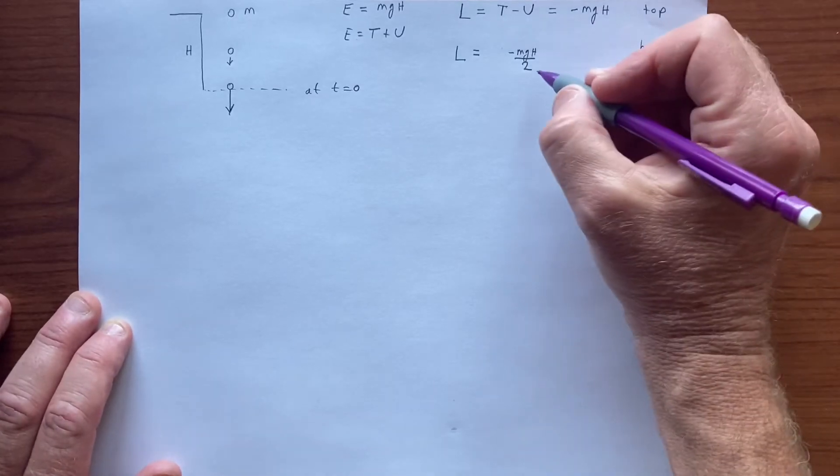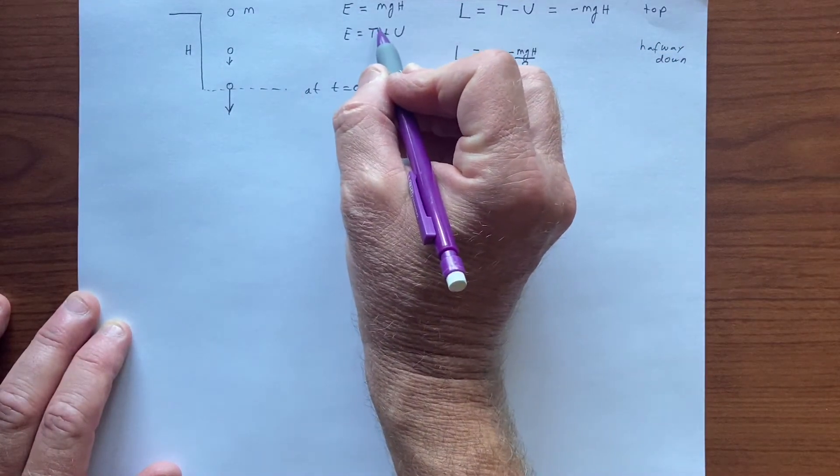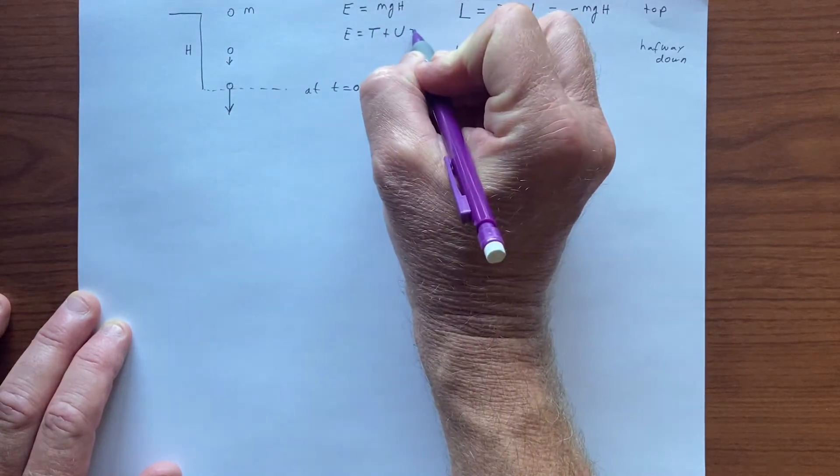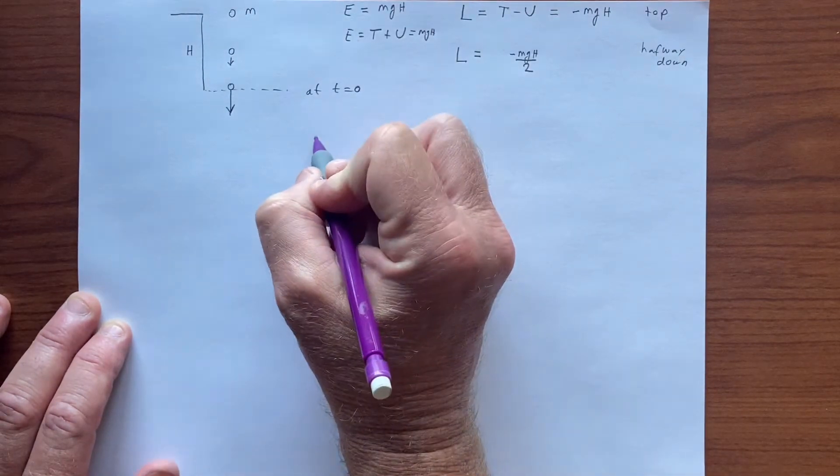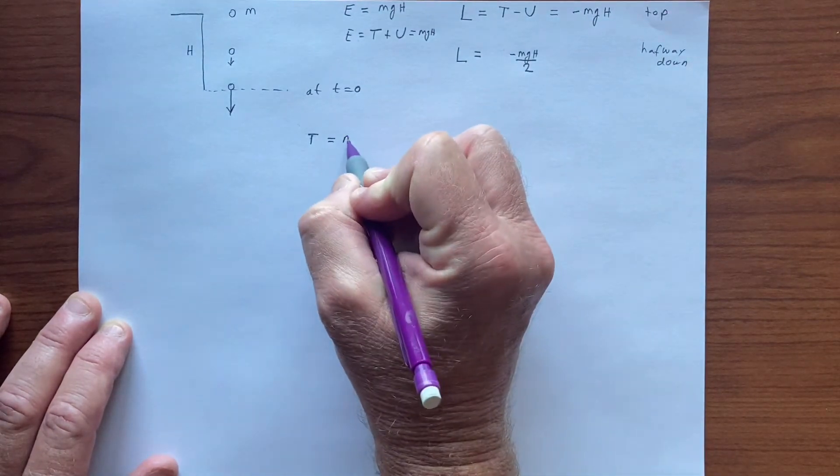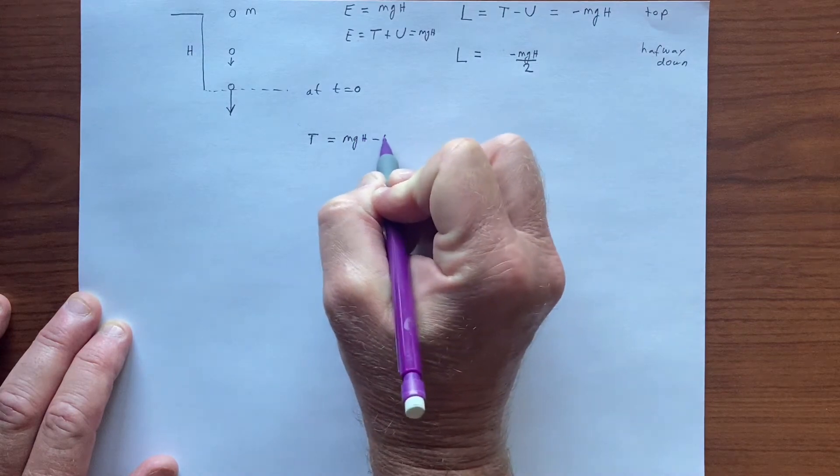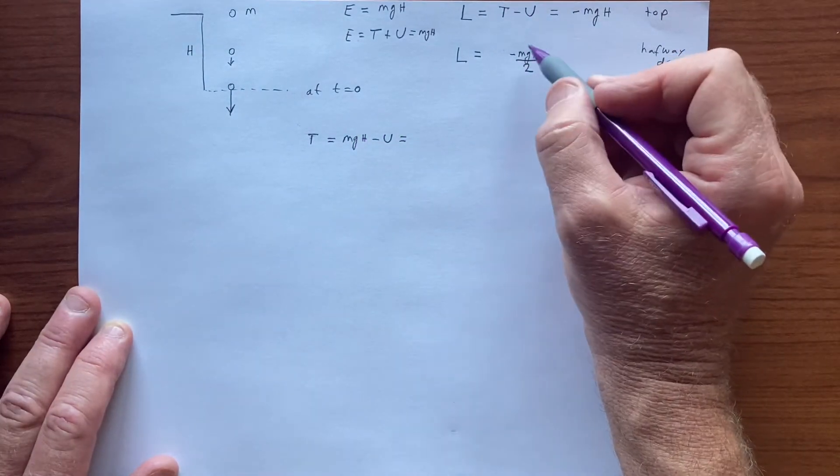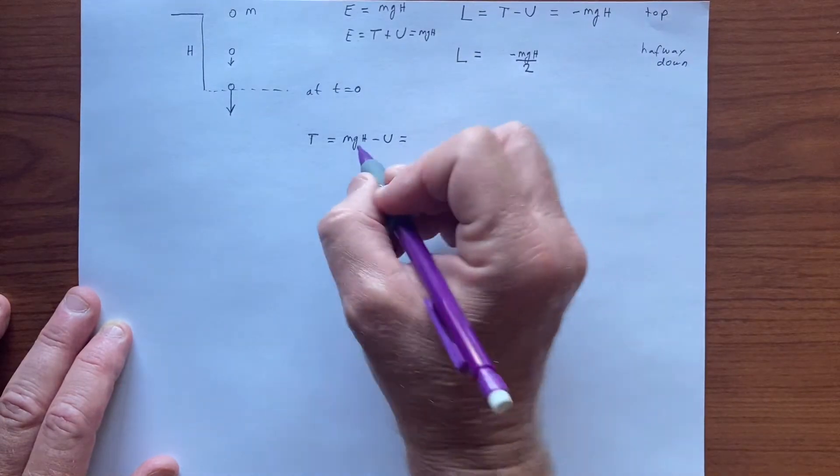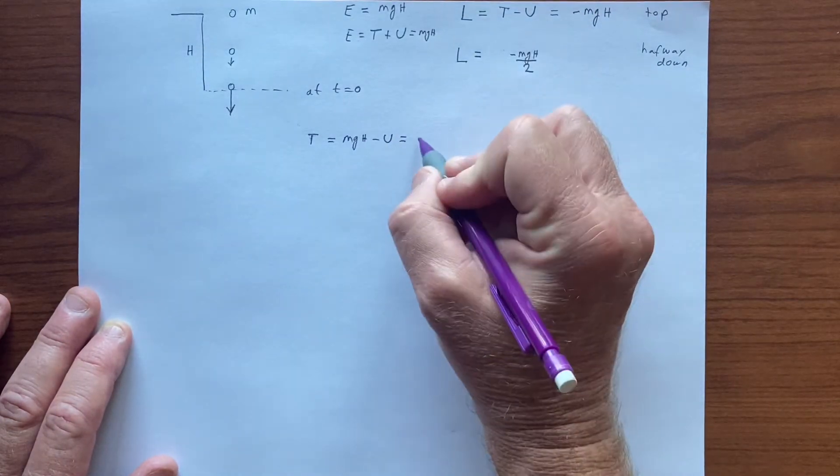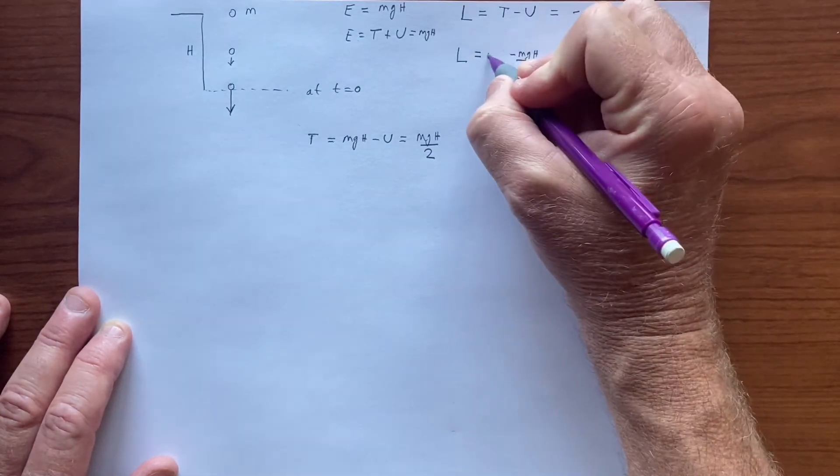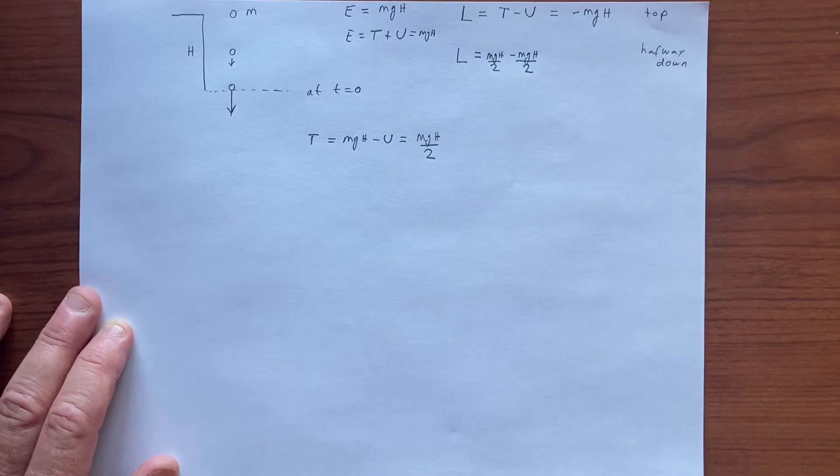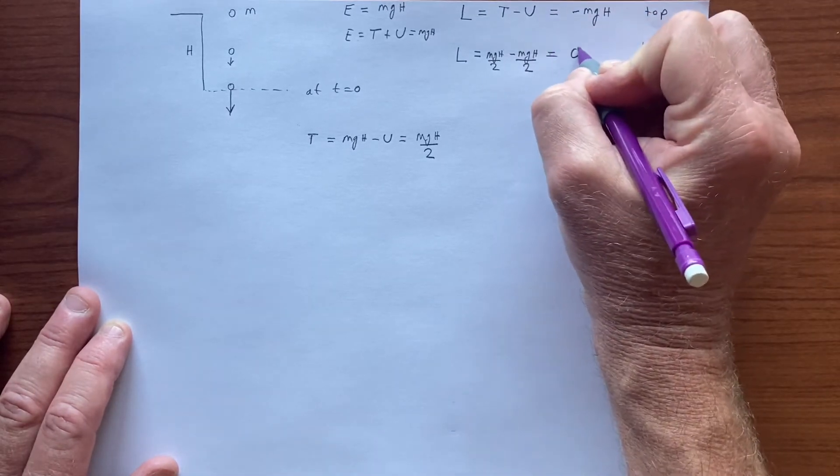And the kinetic energy has to satisfy this relationship where this whole thing has to be mgh, and so it follows that T equals mgh minus U, which in this case is mgh over 2. Then we have mgh over 2 minus mgh over 2, and that quantity is zero.